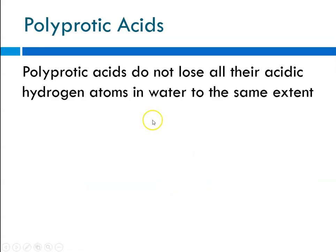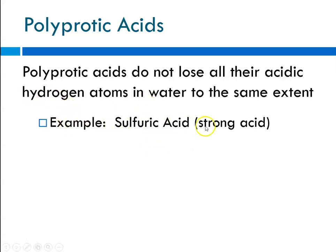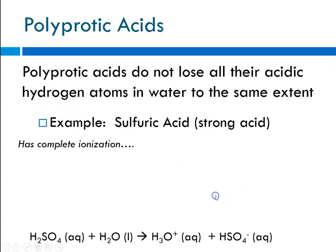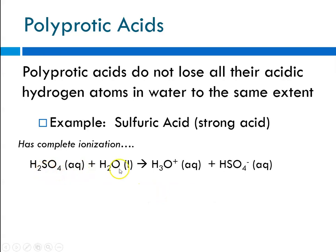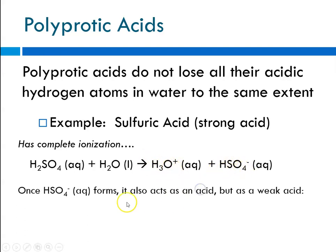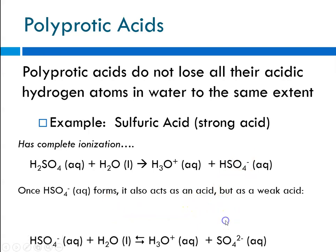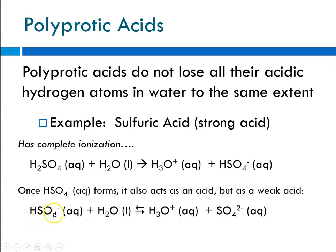Polyprotic acids do not lose all of their acidic hydrogen atoms to the same extent — they come off one at a time. For example, sulfuric acid, a strong acid, undergoes complete ionization. When mixed with water, the first proton comes off producing a hydronium ion and a hydrogen sulfate ion. The hydrogen sulfate then acts as a weaker acid, releasing the second proton to produce another hydronium ion and the sulfate ion.